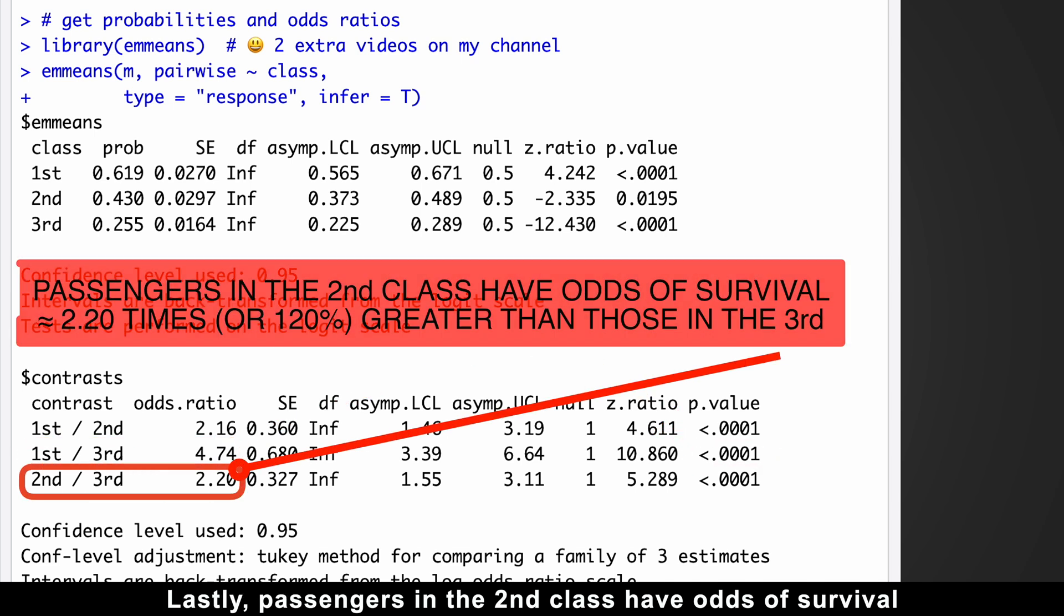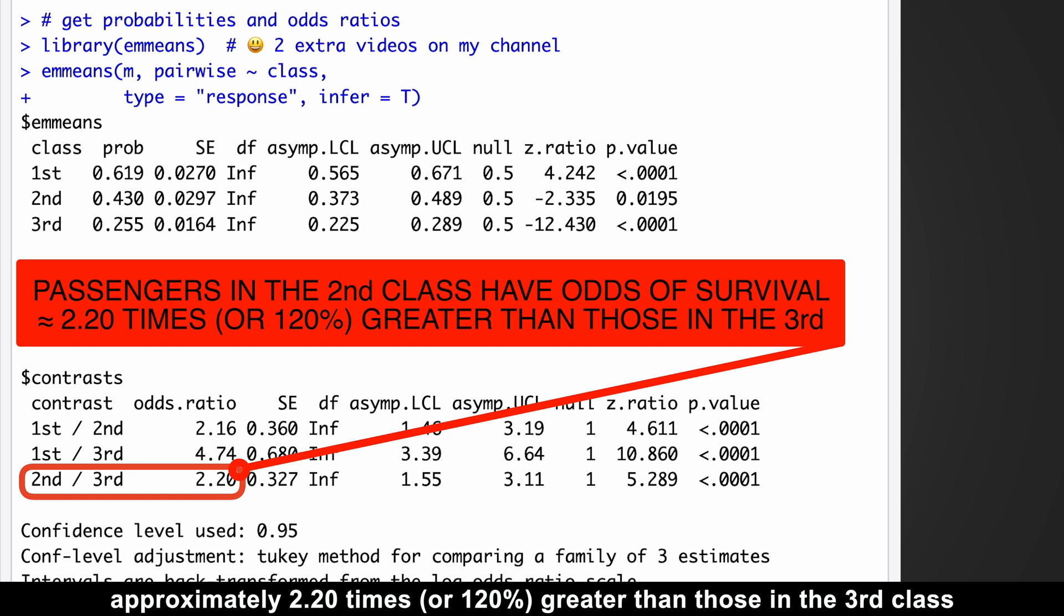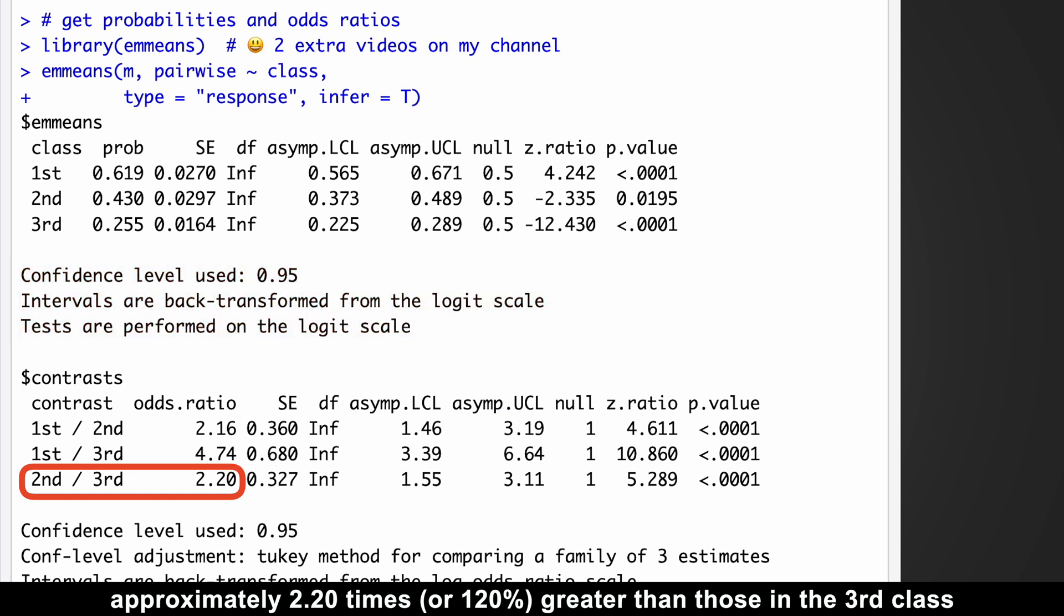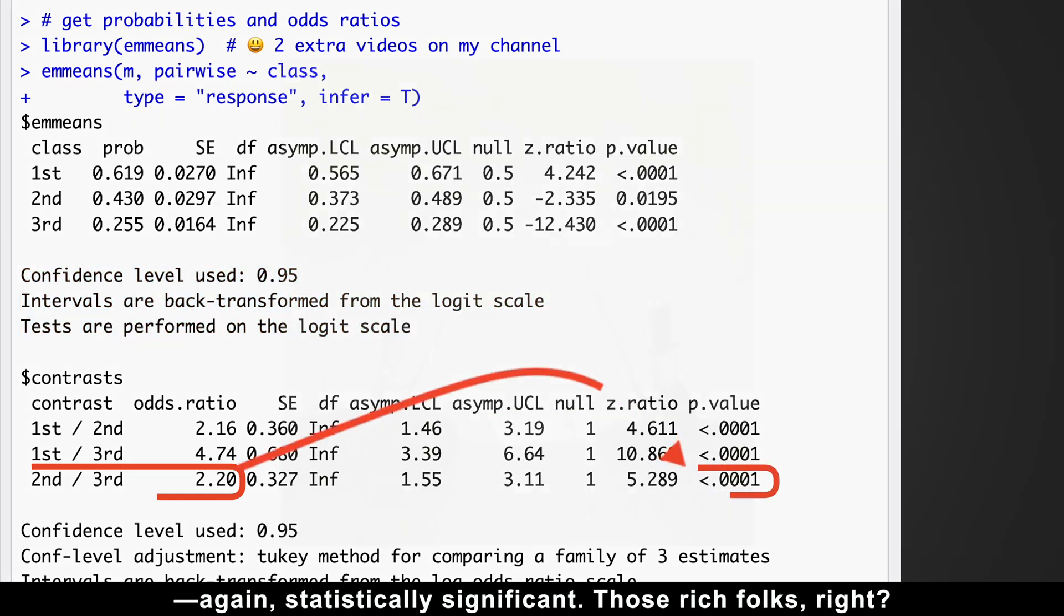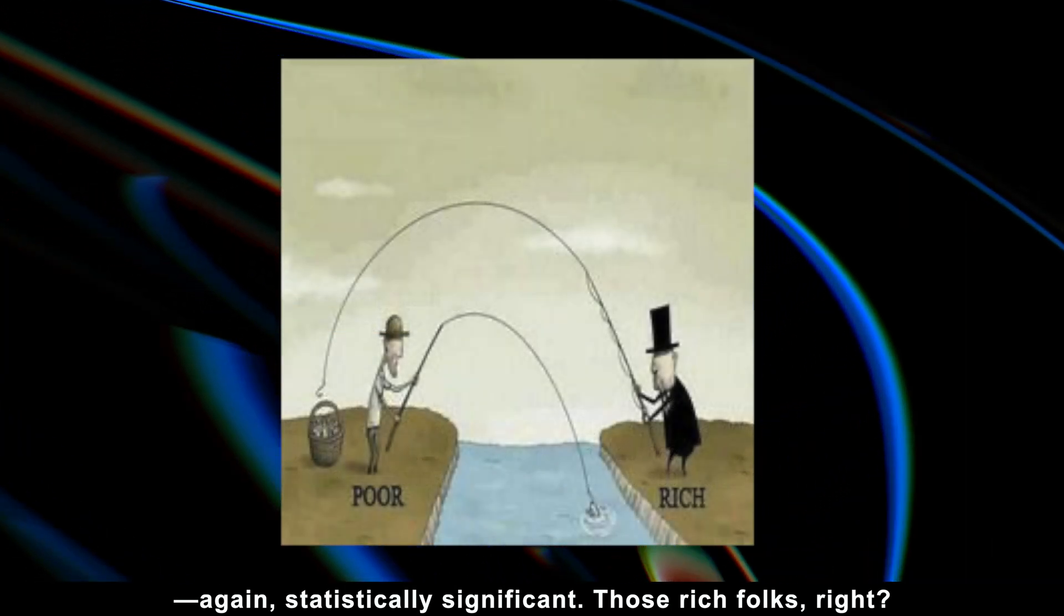Lastly, passengers in the second class have odds of survival approximately 2.2 times, or 120% greater than those in the third class. Again, statistically significant. Those rich folks, right?